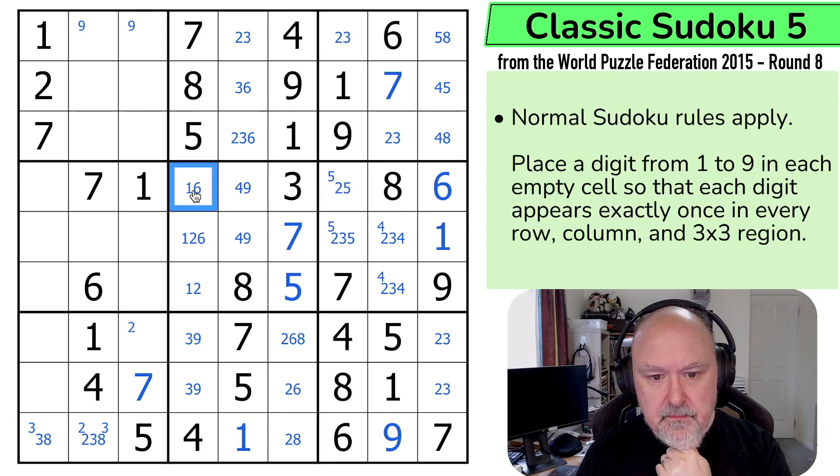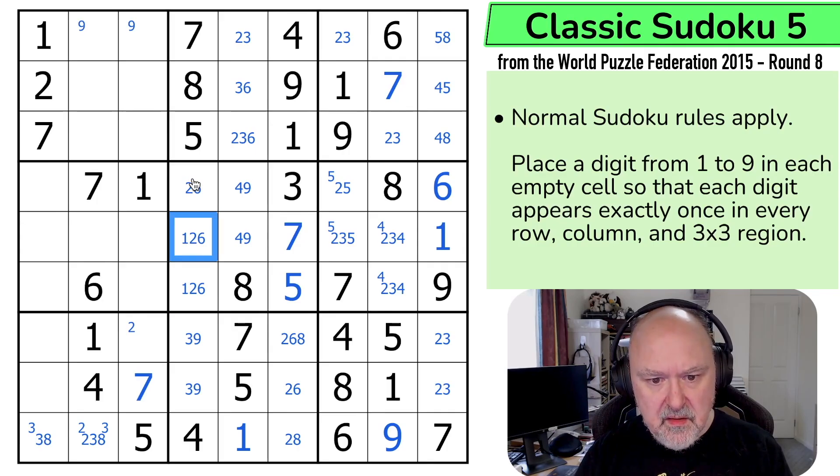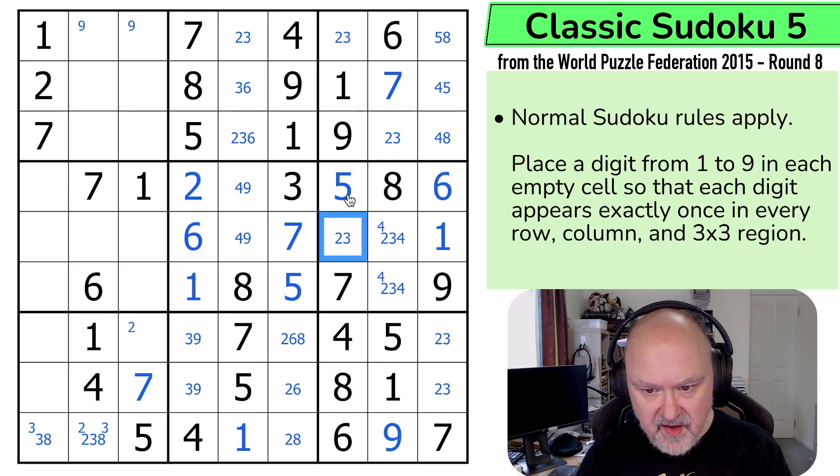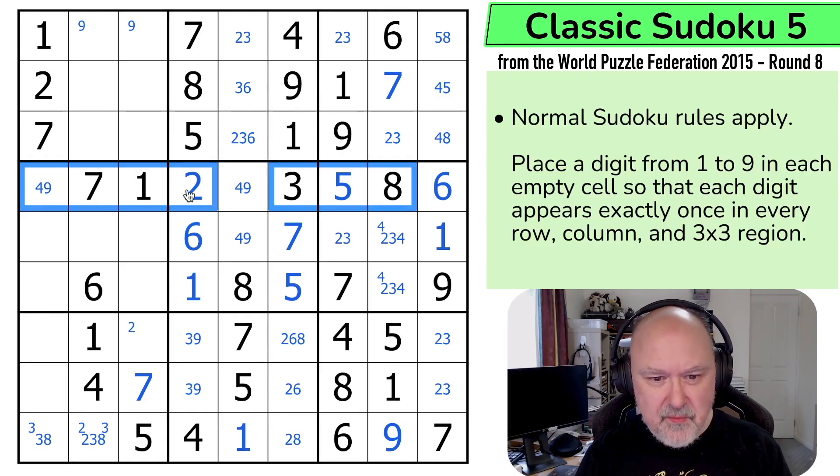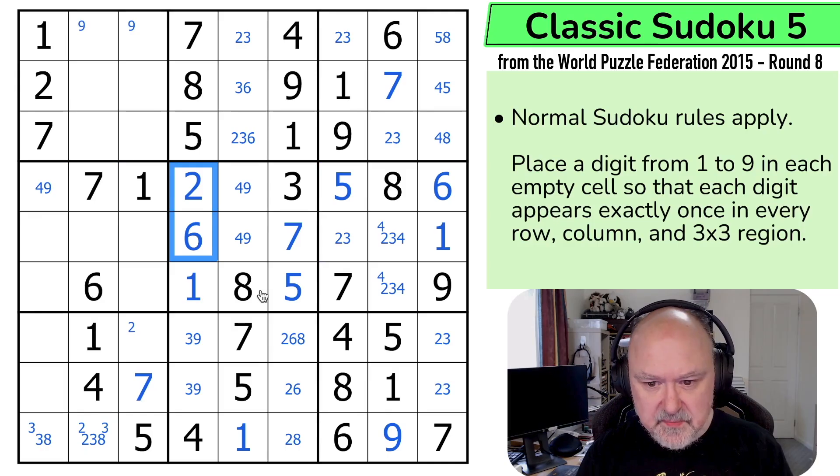Why did I remove 2 from there? I think I removed the wrong digit from there. This was 1, 2, 6. And I think I should have removed 1 from there. Now I can remove - yeah, this should have - I removed the wrong digit from here. That was a mistake of pencil marking.